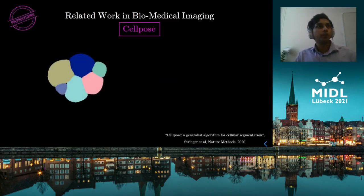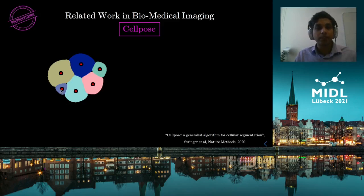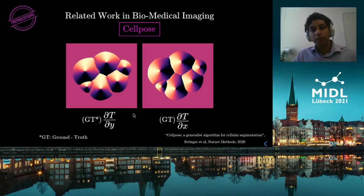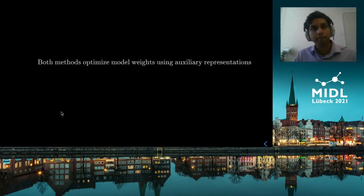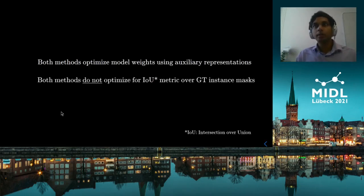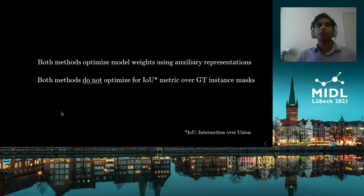In Cellpose the authors went for a different auxiliary representation. They simulate a heat diffusion equation by placing a heat source at the center of each object, which gives a temperature field. Looking at the gradients in x and y gives two target maps that the network should learn to predict. One key thing to note is both methods use auxiliary representations of the ground truth instance masks and do not optimize for the intersection over union metric, which is often the readout we are most interested in.